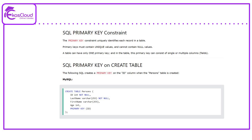The primary key constraint uniquely identifies each record in a table. Primary keys must contain unique values and cannot contain null values. A table can have only one primary key, and the primary key can consist of single or multiple columns.